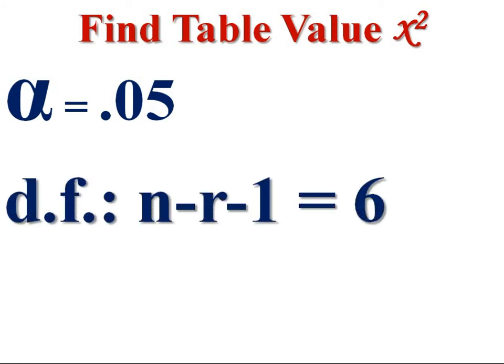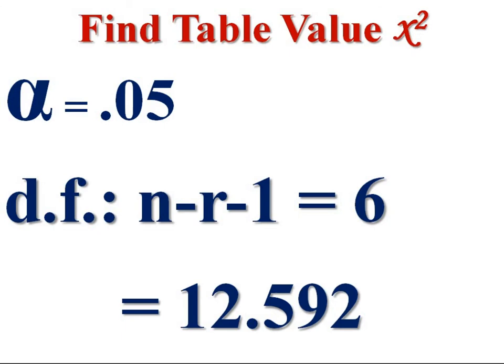Then find table value. It is chi-square test. Level of significance 0.05, 5%, degree of freedom, number of pairs 7, minus number of constraints 0, minus 1, that is, 6. Then the table value being 12.592. Table value of chi-square at 5% level of significance, degree of freedom 6, being 12.592.